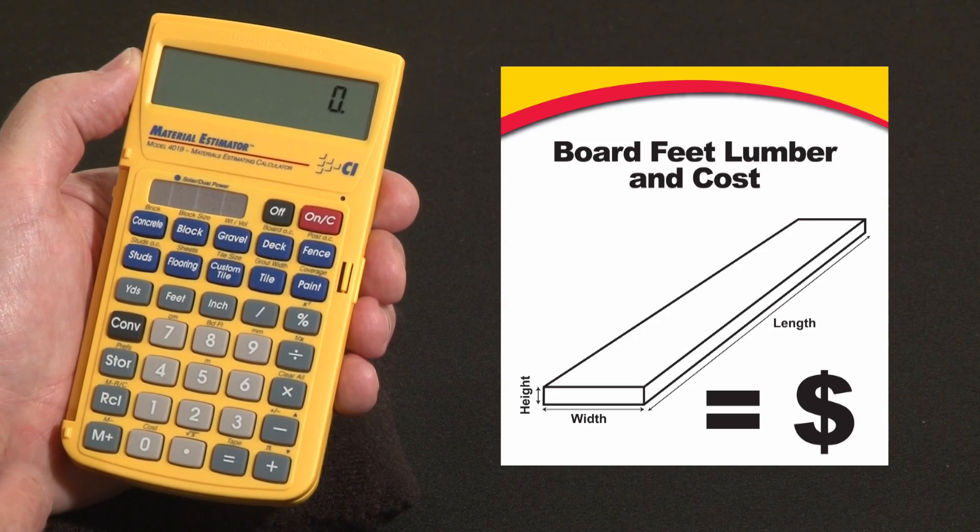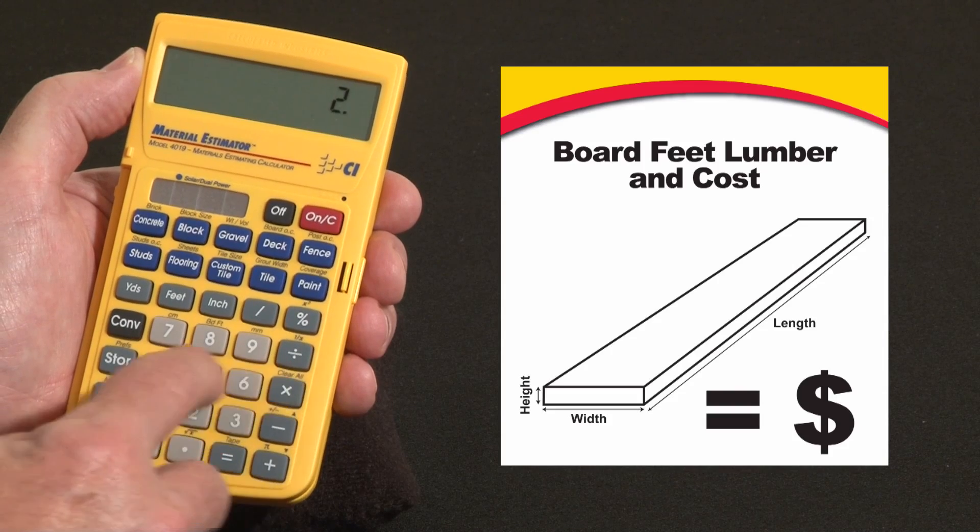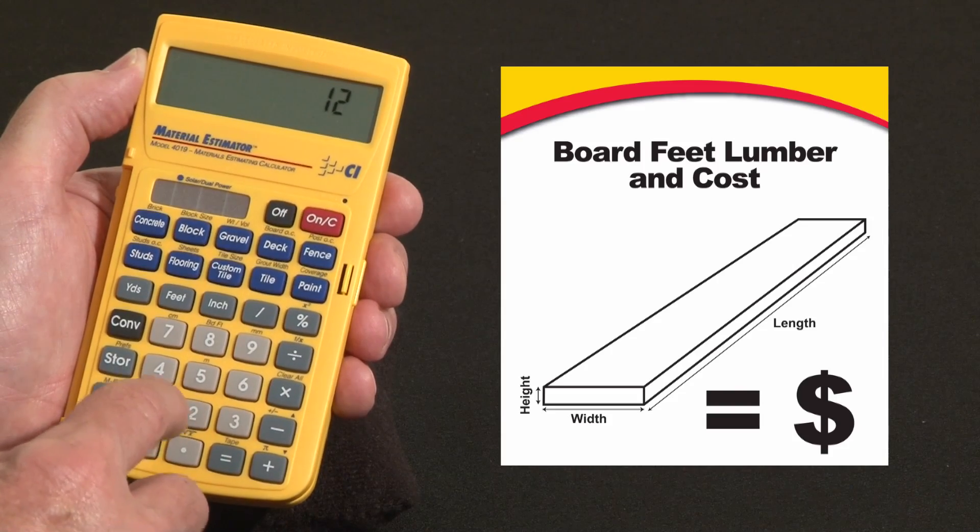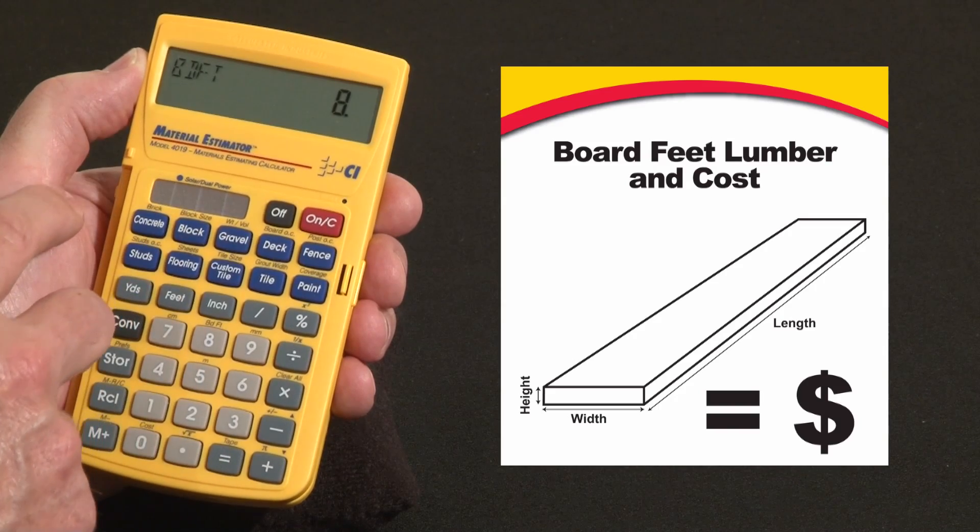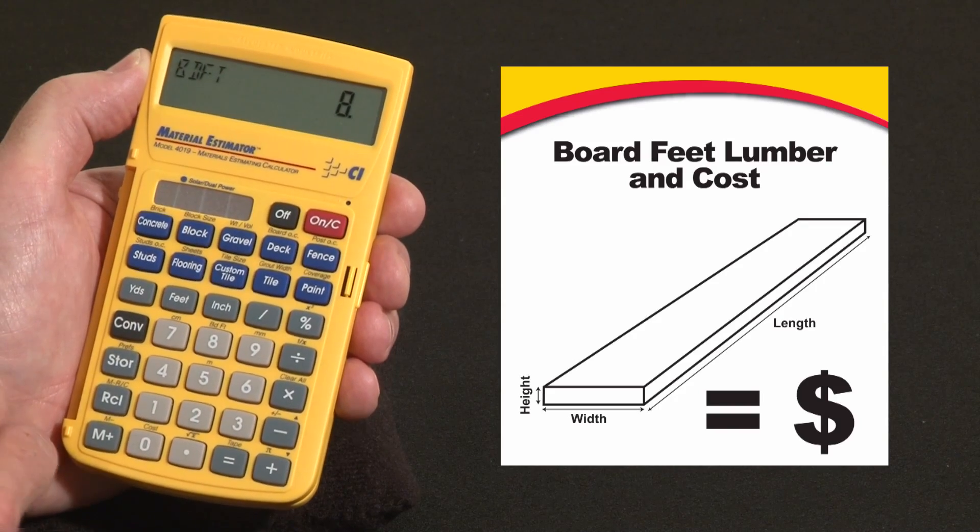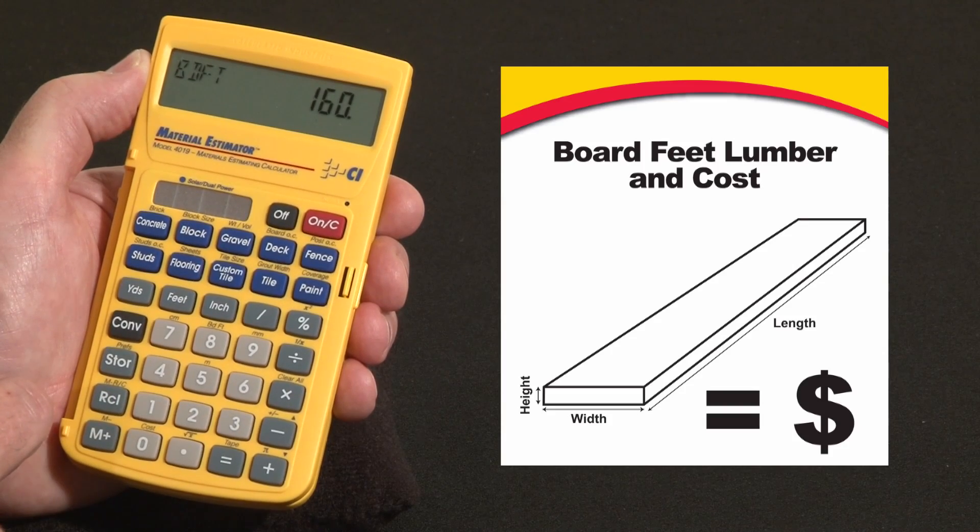Say we need 20 pieces of a 2x4x12. The way you'd put that in is 2x4x12. Then I hit convert and over the 8 key it says board feet. So that 2x4x12 is 8 board feet. I needed 20 of those, so times 20 equals 160 board feet.